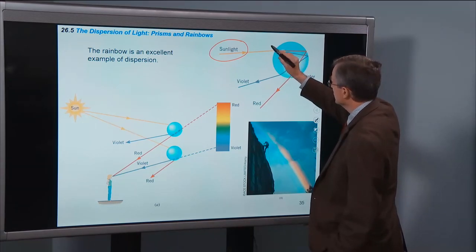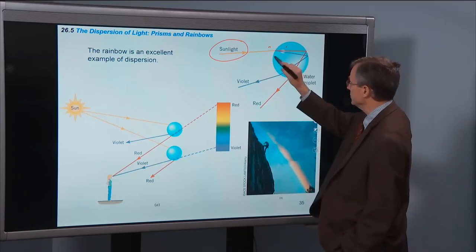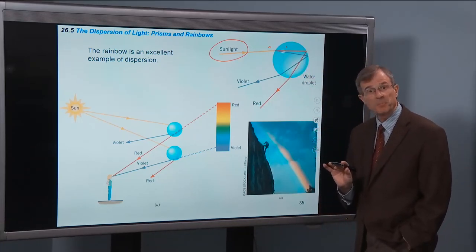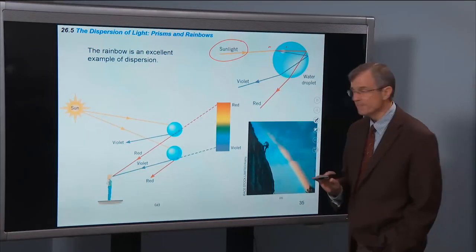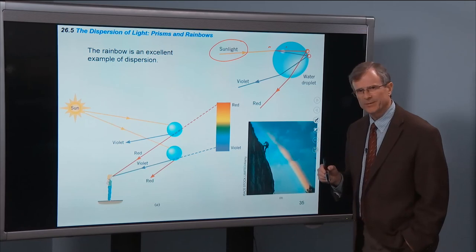There's, as it passes from air here to water here, there's a refraction with the violet bending more, refracting more. And then there's just a single reflection here, rather than two.